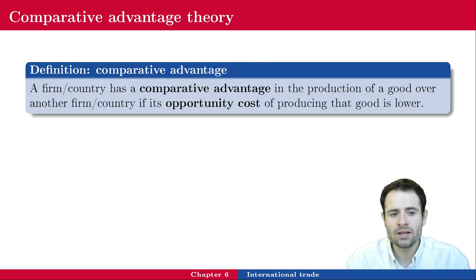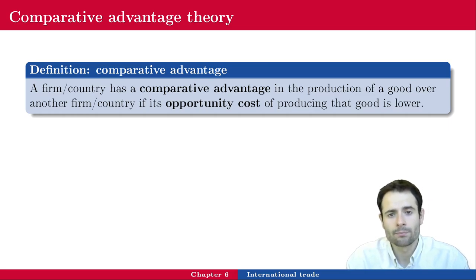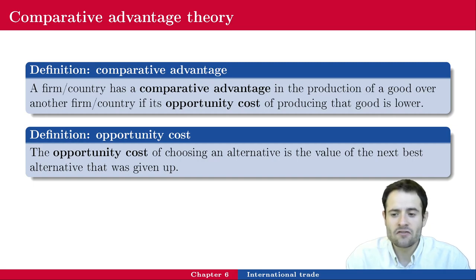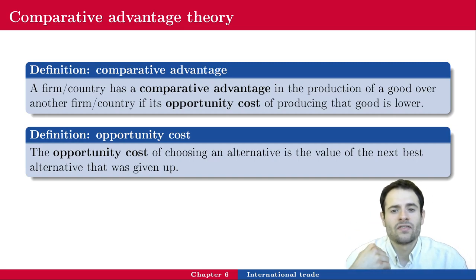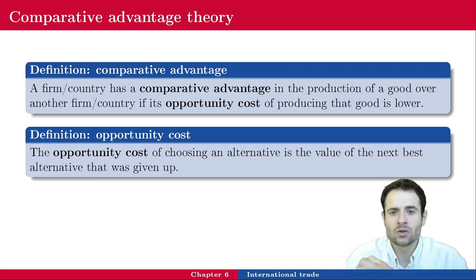A firm or country has a comparative advantage in the production of a good over another if its opportunity cost of producing that good is lower. The opportunity cost of choosing an alternative is the value of the next best alternative that was given up. For instance, one might have a comparative advantage in skateboarding or table tennis as opposed to basketball — because if you're bad at basketball, deciding to play basketball means giving up a good performance at the things you're actually decent at.